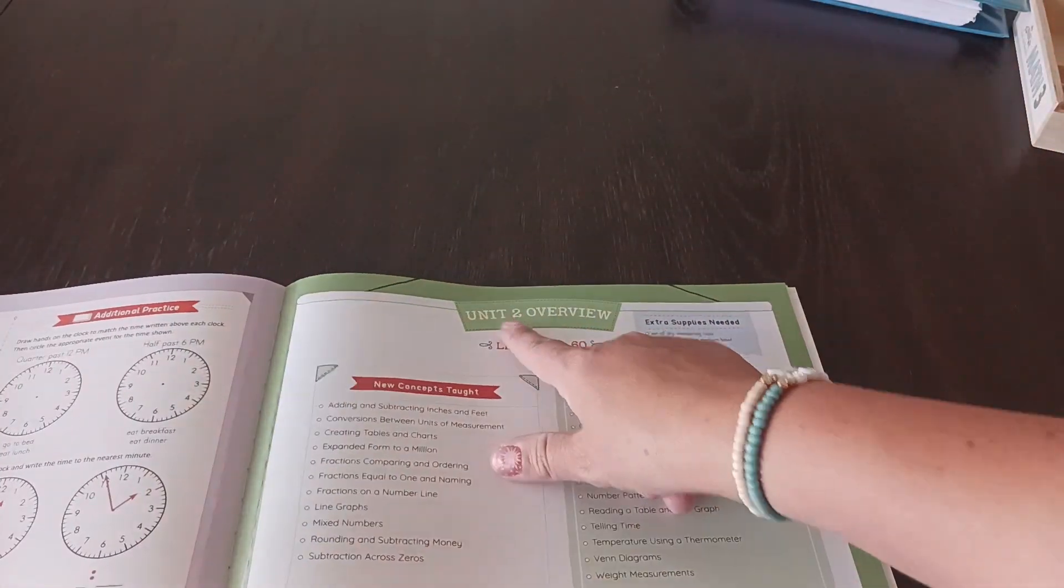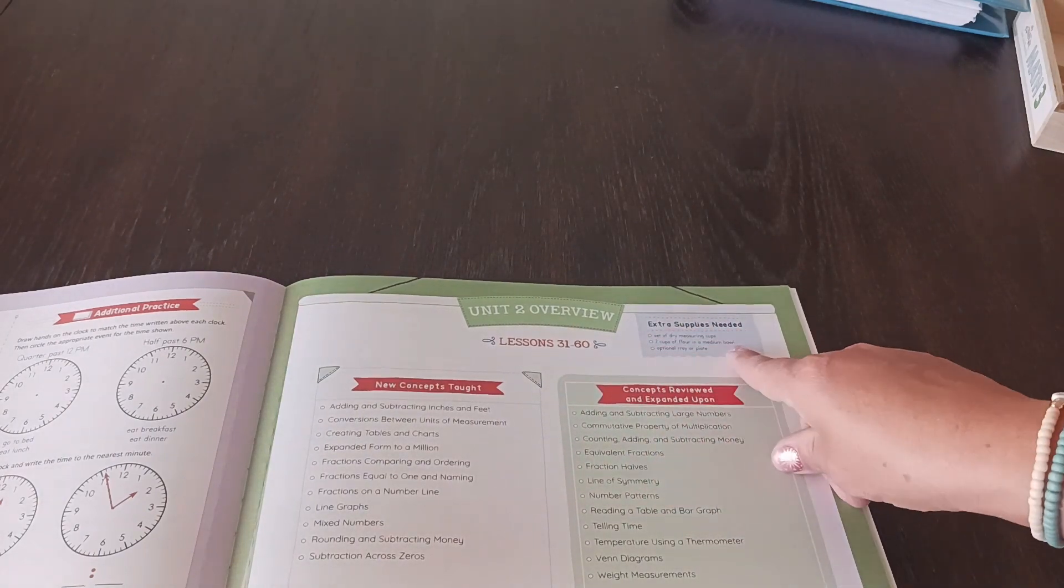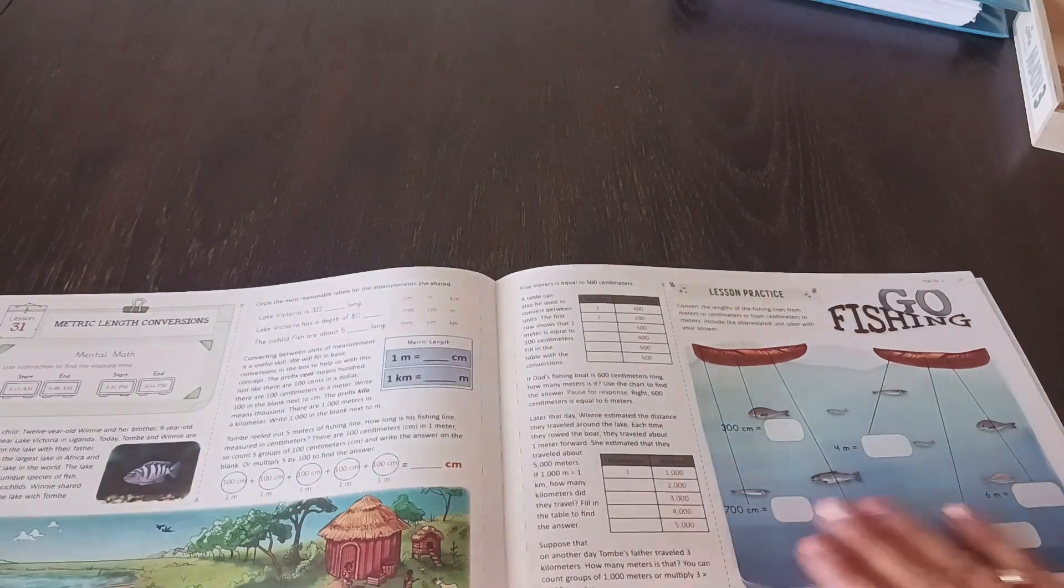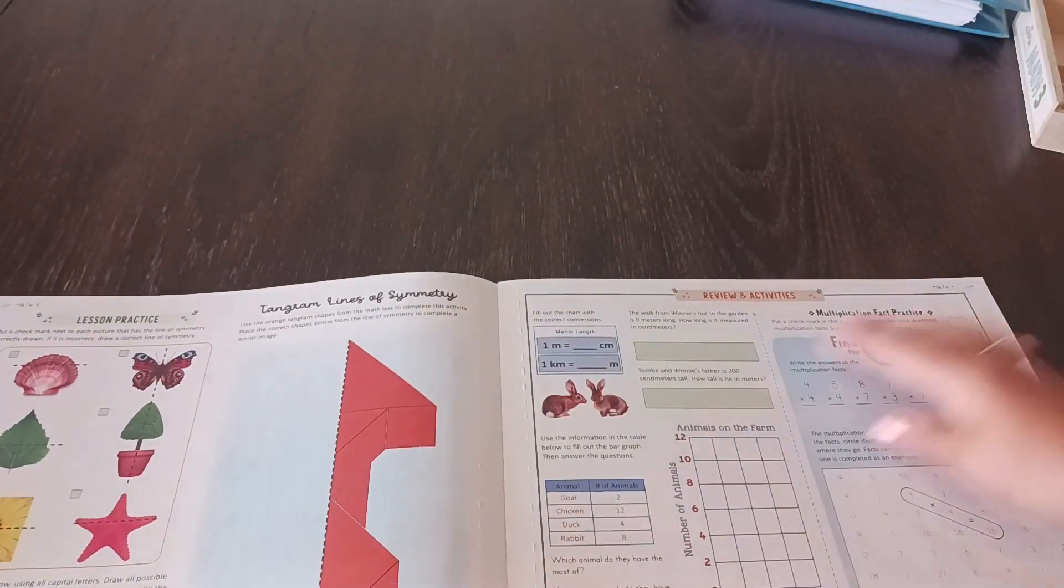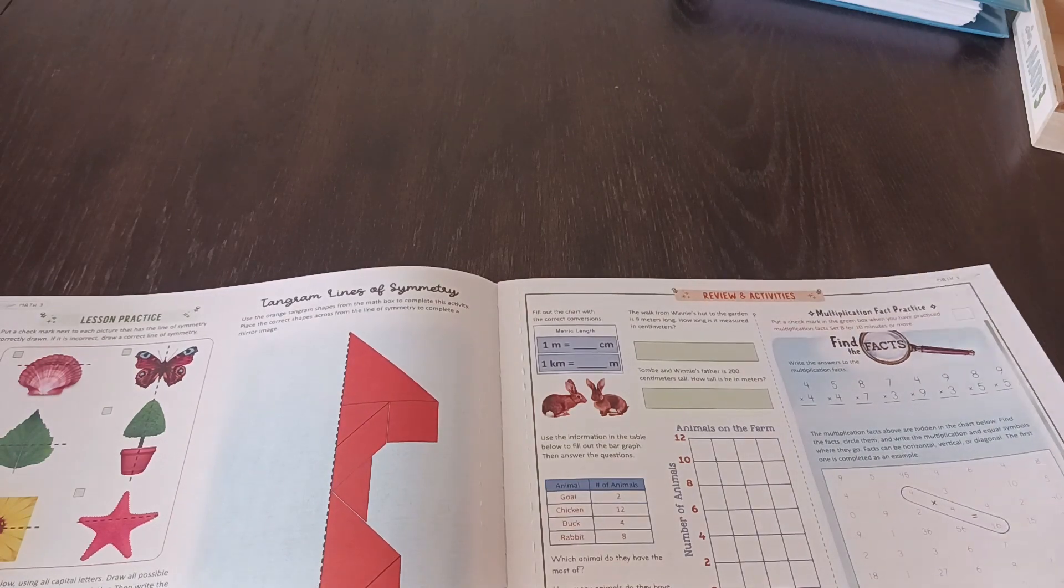Then you'll go to the unit two and it's going to show you all the supplies you need for that. And the supplies are simple. It's like stuff that you have at your house already. So it's not like you really have to go out and get anything other than your regular school supplies you might have for the year. And so that is math grade three.